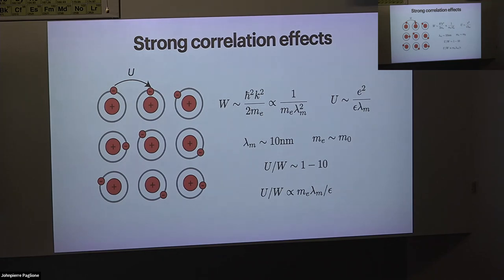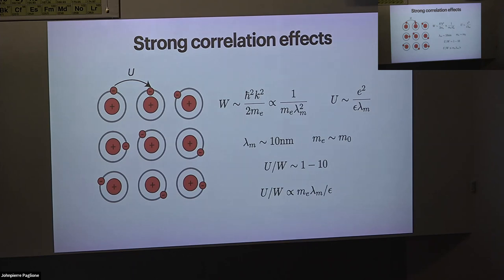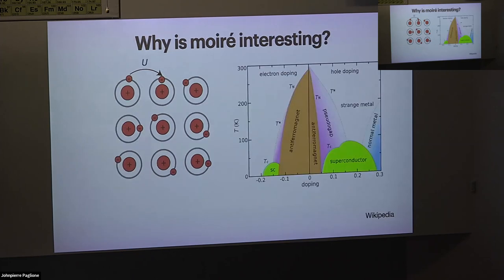The important point is that the U/W ratio is proportional to the effective mass, which makes an important distinction between TMDs and graphene. In graphene, you need to hit the magic angle to have a large effective mass, but in TMDs the electrons are already massive, so you do not need to go to a magic angle. You can create correlated states over a wider range of conditions. Also, by changing the Moiré unit cell size, you can tune the U/W ratio. So overall, this is a highly tunable system.